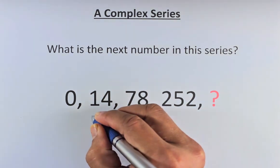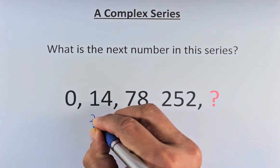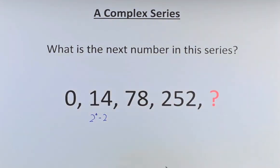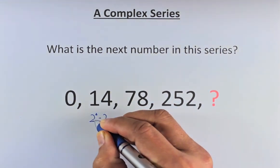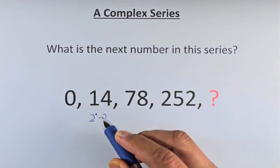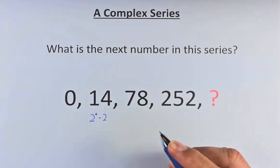14 is actually 2 to the power of 4 minus 2. So the second number is 2 power 4 minus the number itself. That gives us 14. 2 to the power of 4 is 16. 16 minus 2 is 14.